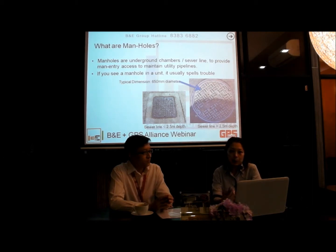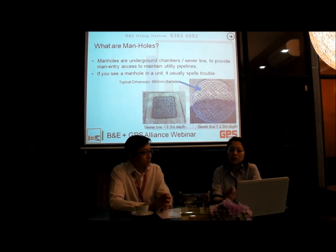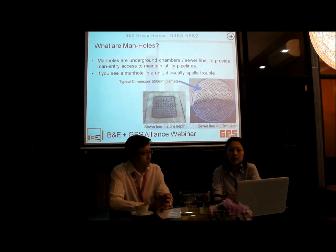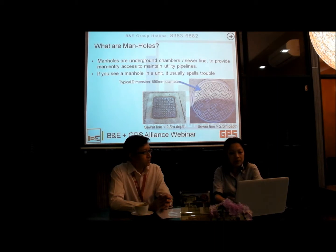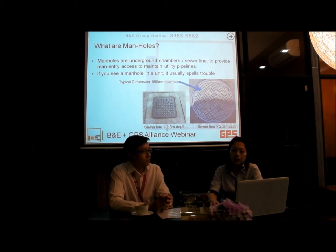Other than IC, another technical term is manhole. Unfortunately, manholes cannot be relocated, and there is no way that a building can extend across a manhole. Manholes are underground chambers used for mandatory maintenance access to utility pipelines. If a manhole happens to be within the unit it usually spells trouble. Manholes may appear square or round — square manholes indicate a sewer line that is 2.5 meters deep, which affects whether the building can proceed with further excavation.